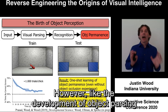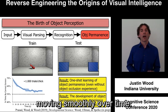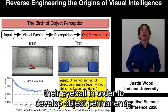However, like the development of object parsing and object recognition, we also found that the development of object permanence requires experience with objects moving smoothly over time. Newborn chicks need to see objects moving smoothly across their eyeball in order to develop object permanence.